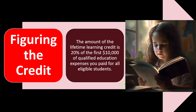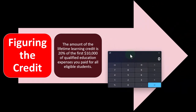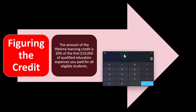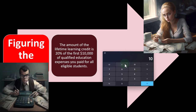The amount of the Lifetime Learning Credit is 20% of the first $10,000 of qualified education expenses paid for all eligible students. Once we have the qualified education expenses, we calculate the credit: 20% of $10,000 gives us a $2,000 credit, which is the maximum amount of the credit.